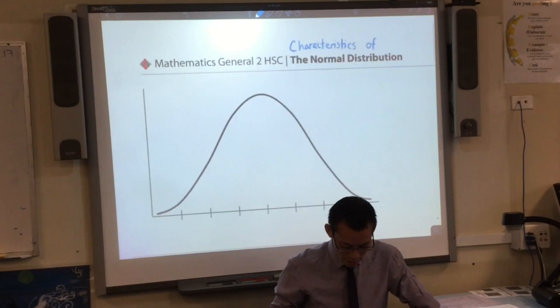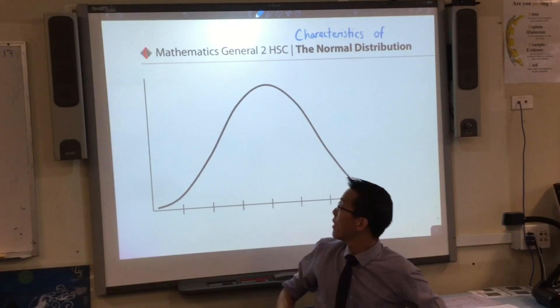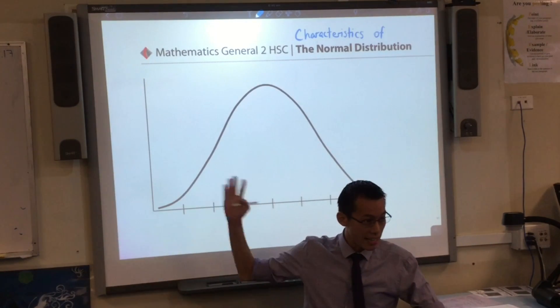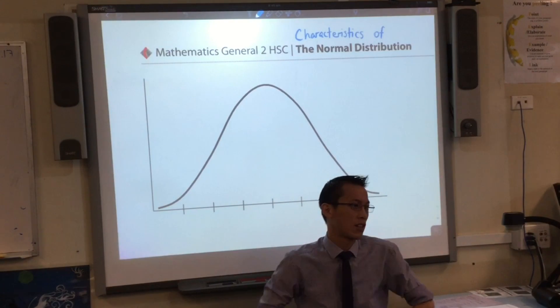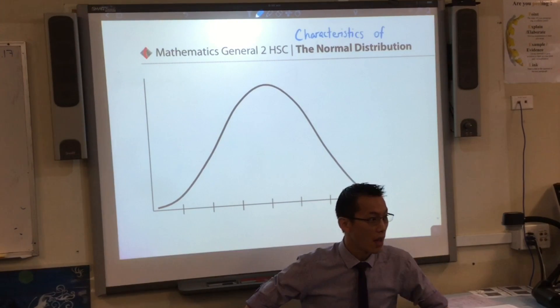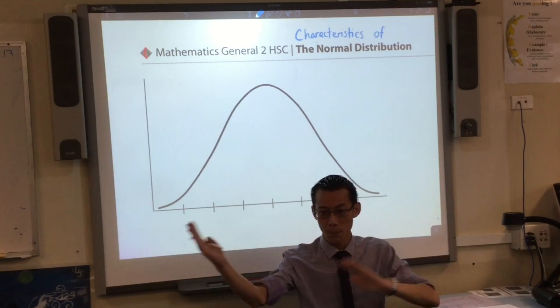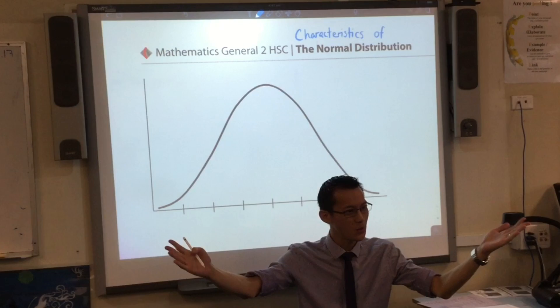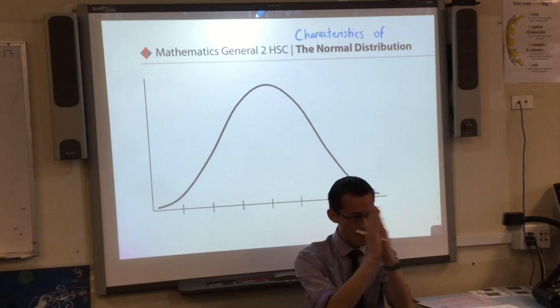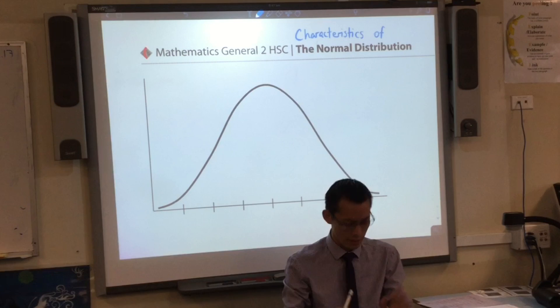So at the moment we know two characteristics about the normal distribution, and they're right there in your face when you just look at what the graph looks like. Can someone give me one of the characteristics? Okay, so clearly you can see it's symmetrical. There's no positive or negative skew. It's right smack bang down the middle. It's a bell curve shape, so that's the first thing that we notice.